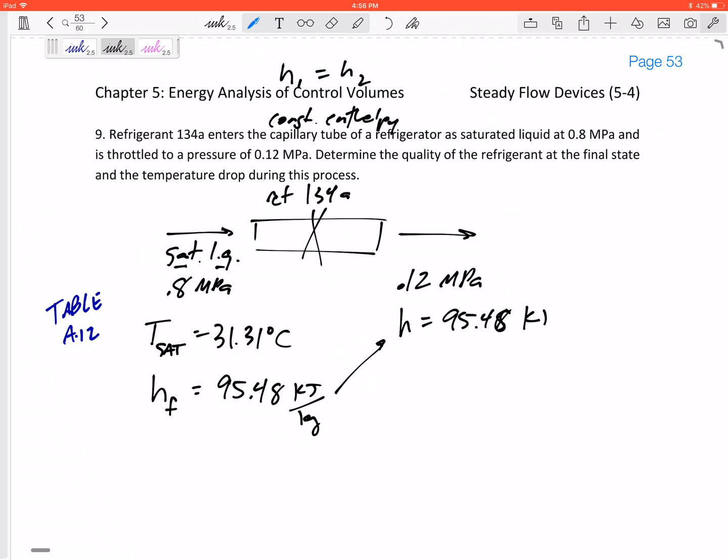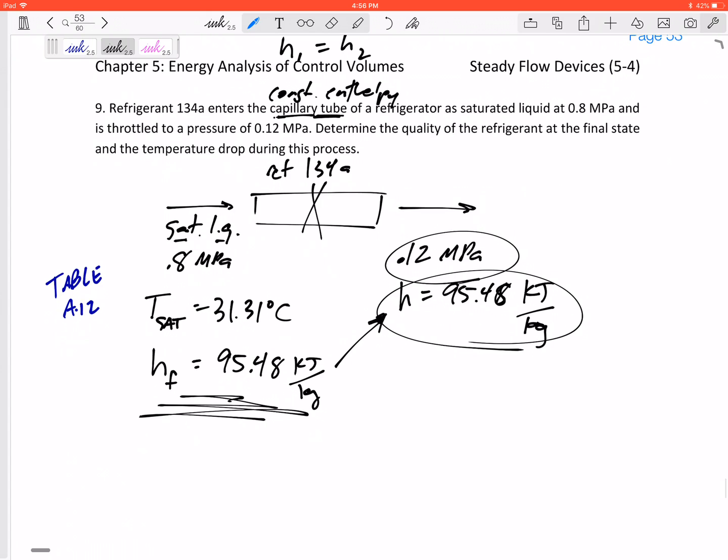Now it may not be a saturated liquid, but its h is also 95.48. This is also 95.48. This is kind of the connecting link that gives us enough information. Now I have two pieces of information for state 2.